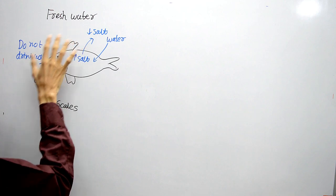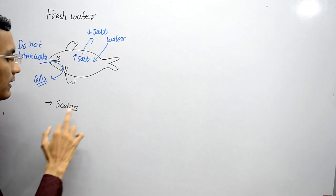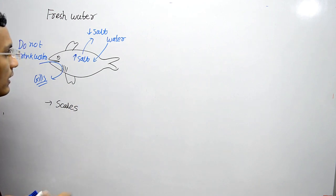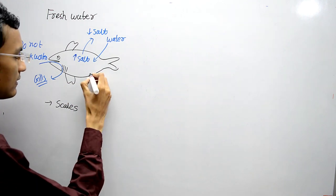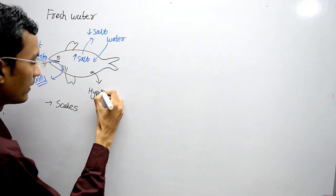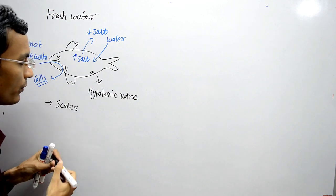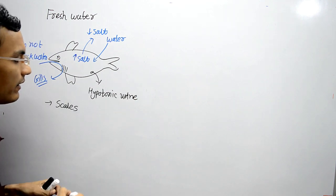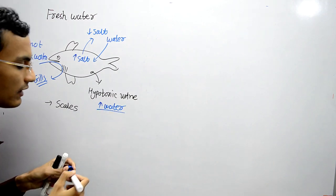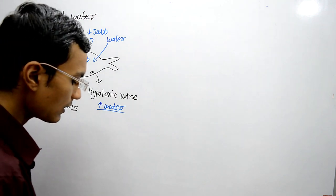Freshwater fish do not drink water, and to prevent excess loss of salt they have scales. The water that enters the body is removed through hypotonic urine — urine that is less concentrated and contains a high quantity of water. So excess water is removed through hypotonic urine.